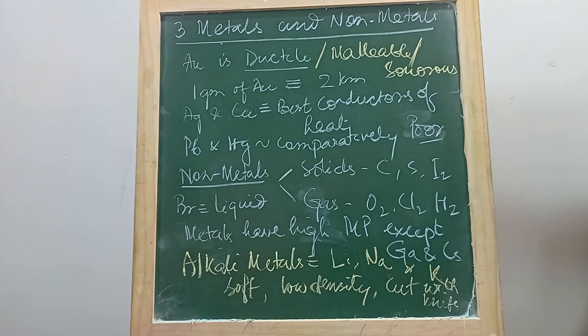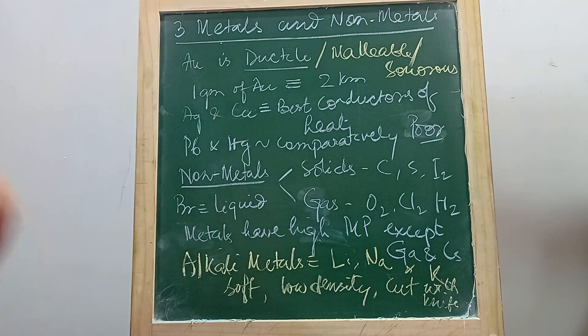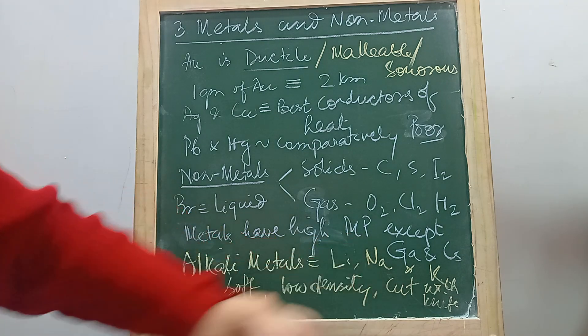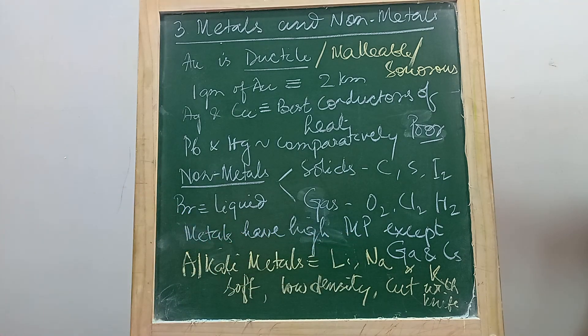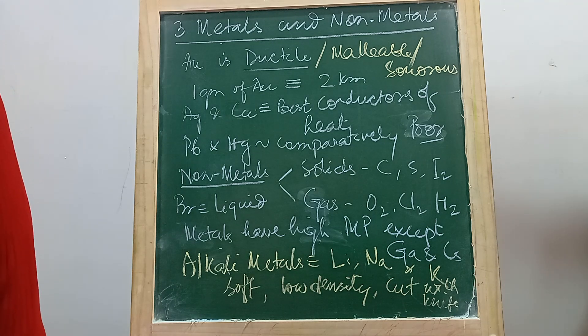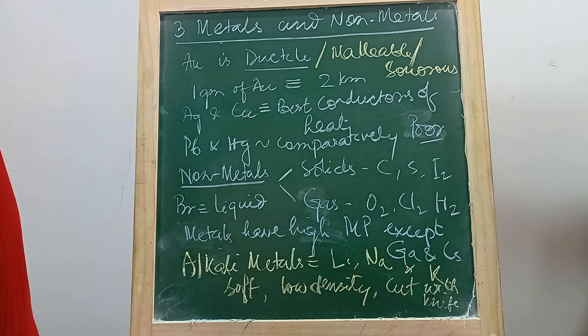Now metals have high melting points. They do not melt easily. You need to heat them a lot, only then they will melt. And that's why they are used in cooking vessels. Especially copper is very good, also aluminum and stainless steel. Steel is an alloy of iron and other elements.